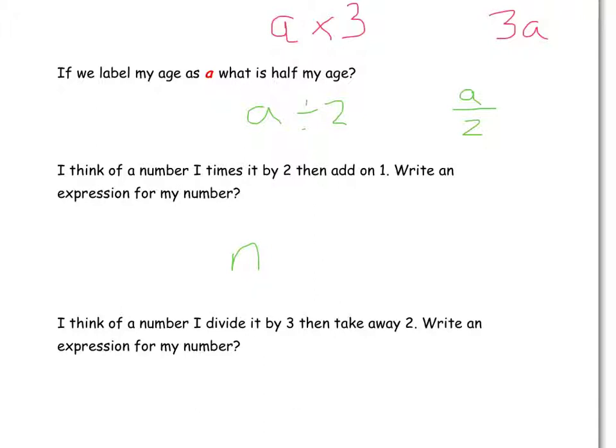It says, firstly, it's times by 2. And if you remember up here, when we did times by 3, we wrote it as 3a. So if we're times it by 2, it's 2n. And then it says, then add on 1. So it's 2n, add on 1.